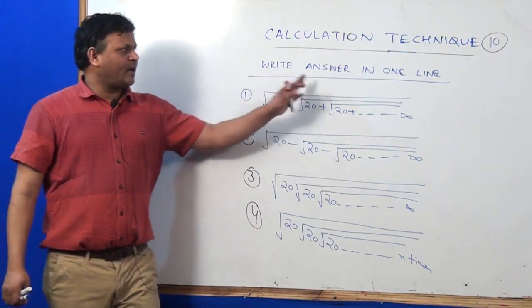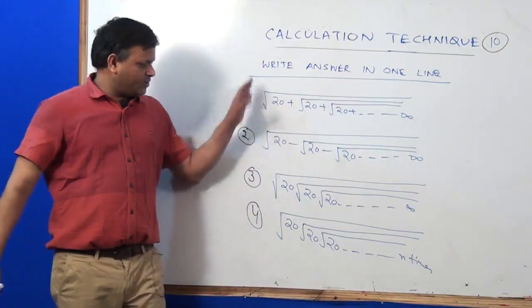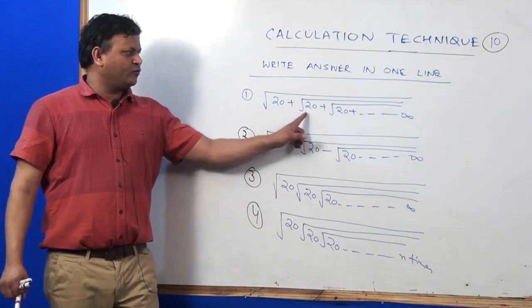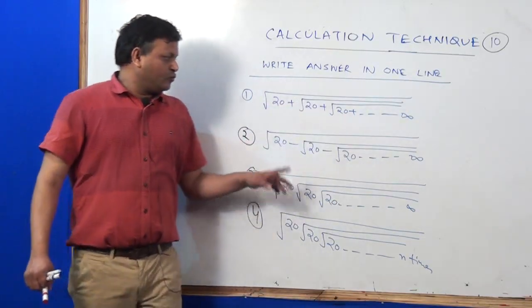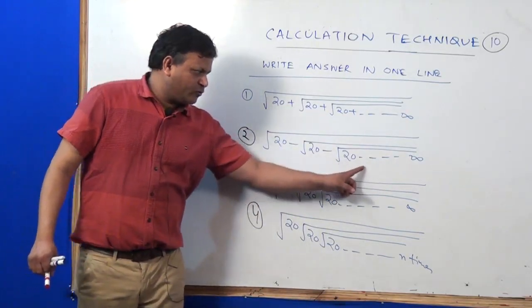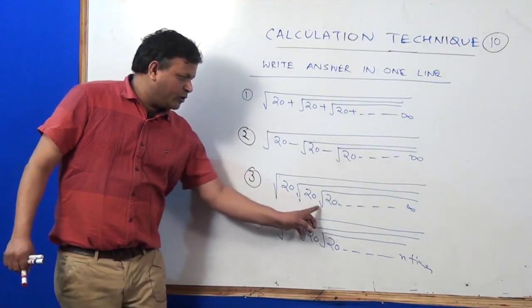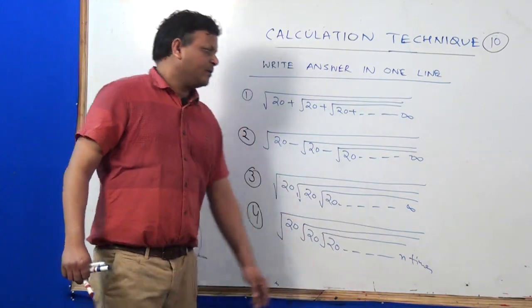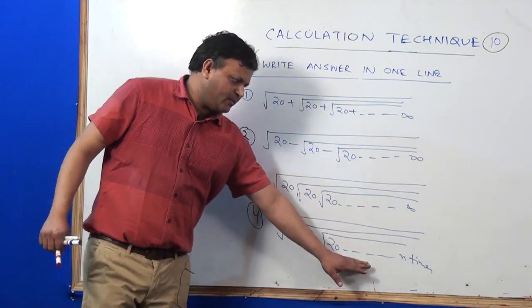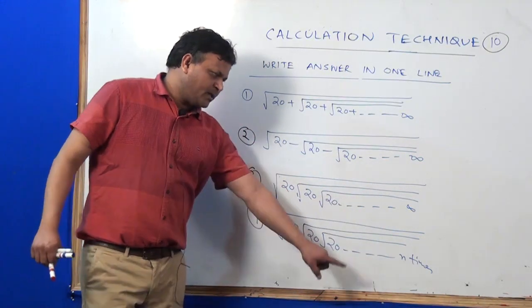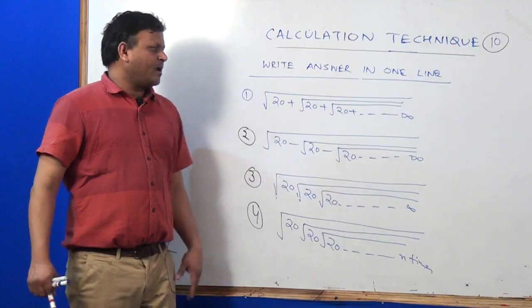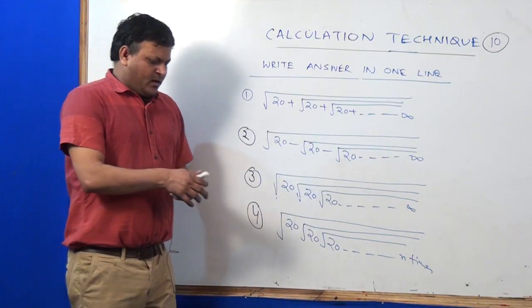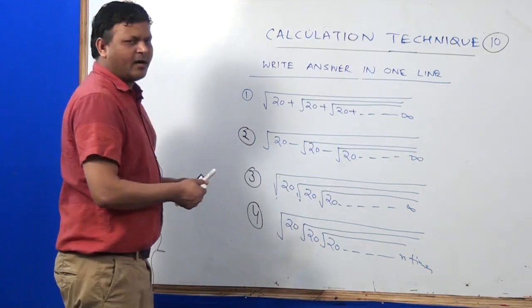Calculation technique 10: write the answer in one line. Look at four problems. [Shows problem with nested square roots]. What do you do? If you solve it, it will come in two lines.